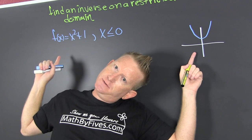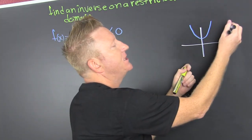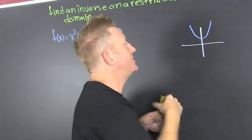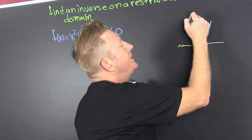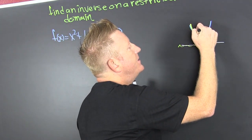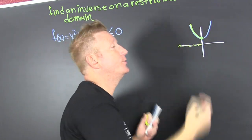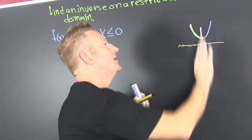That's the graph of that guy right there, blue. It doesn't pass the horizontal line test. But what if we had it restricted so that when the x's are smaller than zero we only get this one piece.